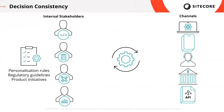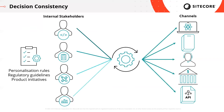Now let's see what this might look like if we were managing the decisions centrally. First of all, all of our internal stakeholders would be collaborating in the same location. This would mitigate the risk of having differences in interpretation and implementation. As new stakeholders provide input, all the rules are updated and consistent across all of your channels. Having this single place for the codification of product, personalization, and regulatory rules means that we can distribute it evenly across channels, ensuring consistency there as well.